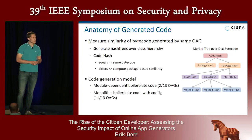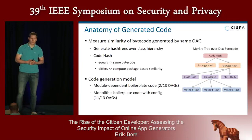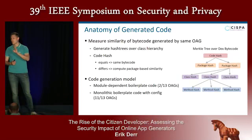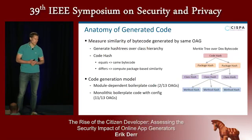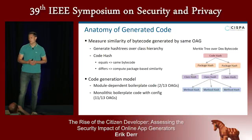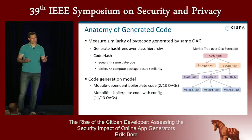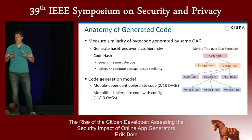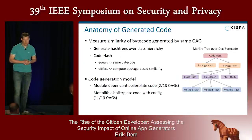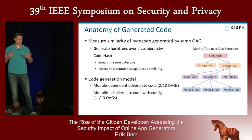The surprising result is that only two online app generators use module-dependent boilerplate code — meaning they reuse the exact same code per module but only generate code for modules selected by the citizen developer. This contrasts with all other 11 online app generators that use monolithic boilerplate code: if the service provides 100 modules, they generate code for all 100 regardless of which modules the developer selected. These apps differ only in one config file — one almighty config file.